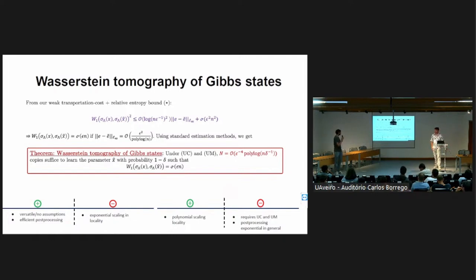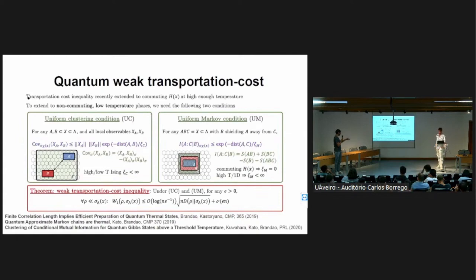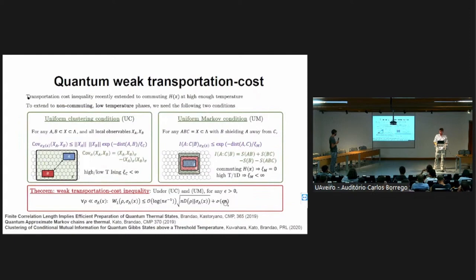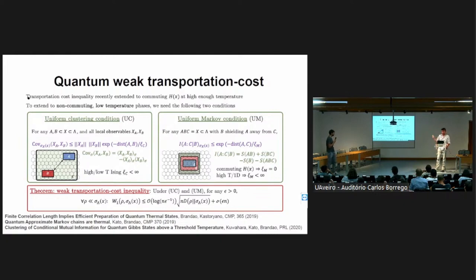Question: You mentioned proving a weak transportation inequality — how is it different from the usual one and what does it give or not give you? Answer: The usual inequality directly relates Wasserstein distance and relative entropy; ours has an extra additive error term. The main application of these inequalities is to prove concentration, and the weak transportation cost inequality is essentially useless for that traditional concentration application, but for the learning application we had in mind, it works.